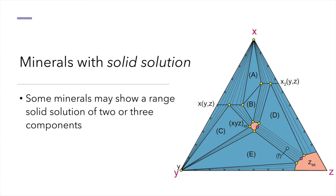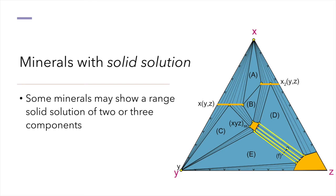For minerals that show solid solution between two components, those minerals will plot as line segments rather than points on our chemographic diagram. Similarly, minerals whose structure allows a continuous range of compositions in all three components will plot over an area. An infinite array of possible tie lines connect the ranges for solid solution compositions, but a few regularly spaced lines are drawn for ease of interpretation.